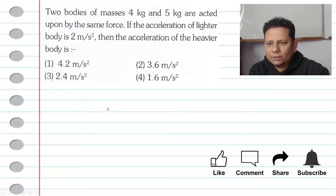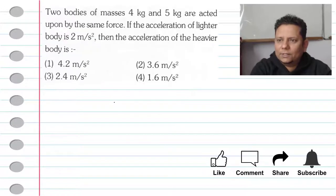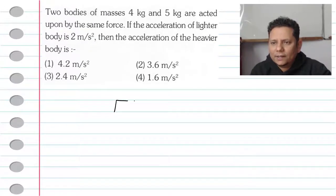This is a scenario where you have two masses: one mass is 4 kg with a force applied, and the other mass is 5 kg with the same force applied. The acceleration of the lighter body is 2 m/s².